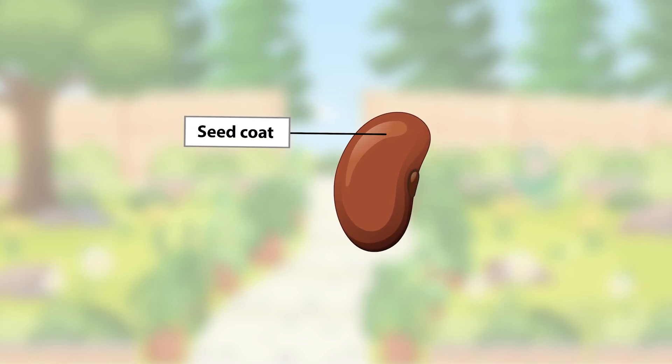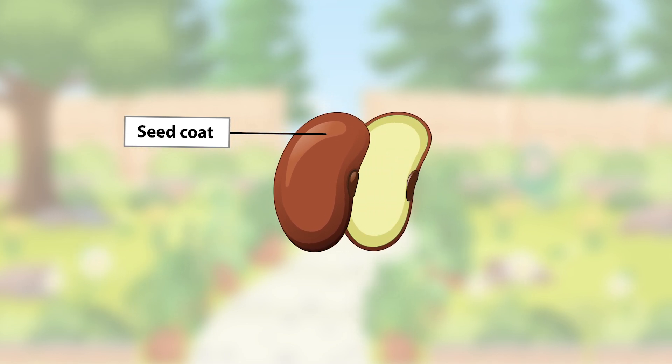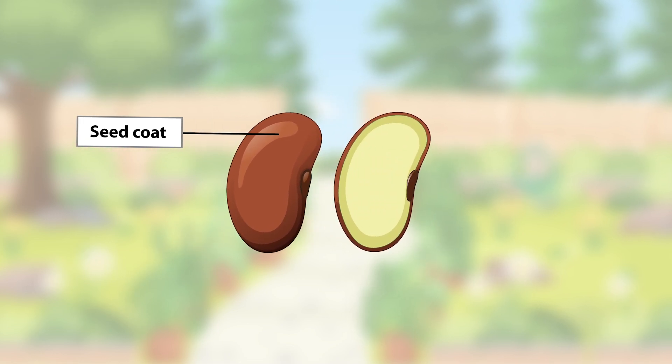First, there's the seed coat. This tough outer layer acts like armor, protecting the seed from damage and keeping it safe until conditions are just right.